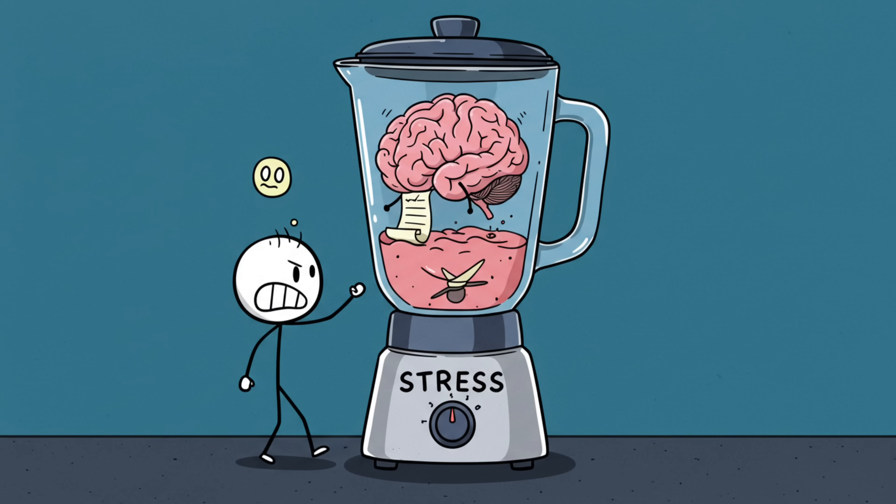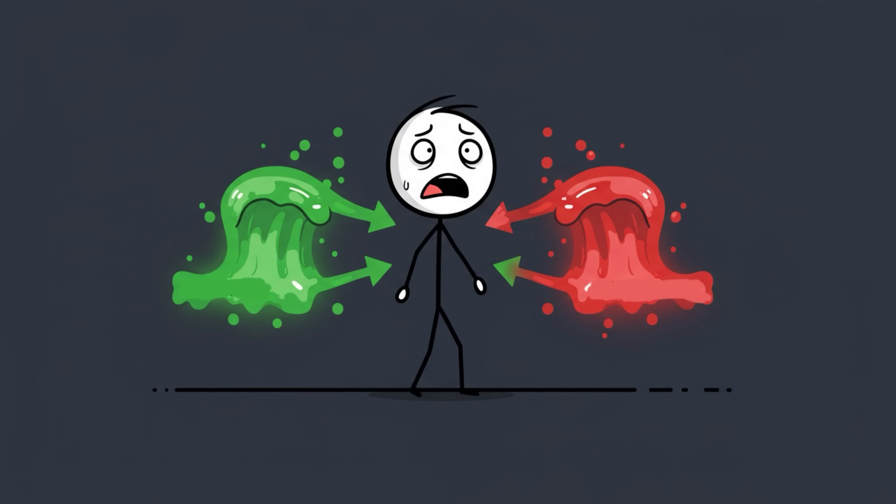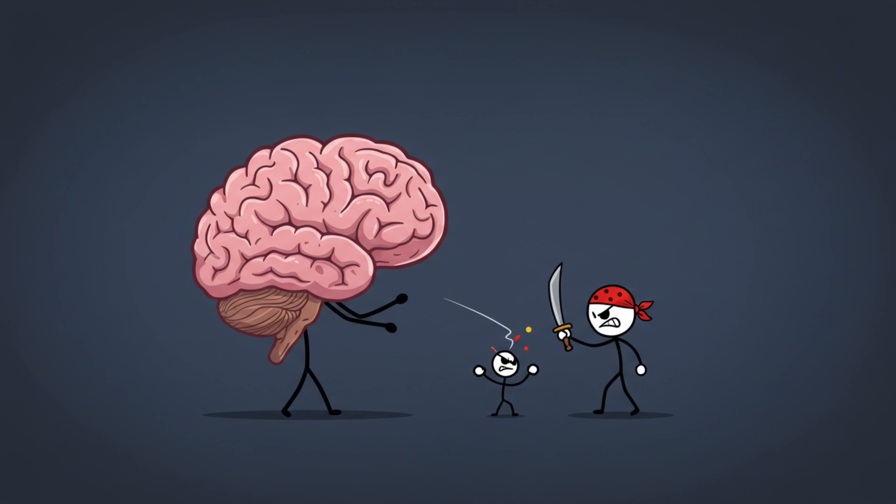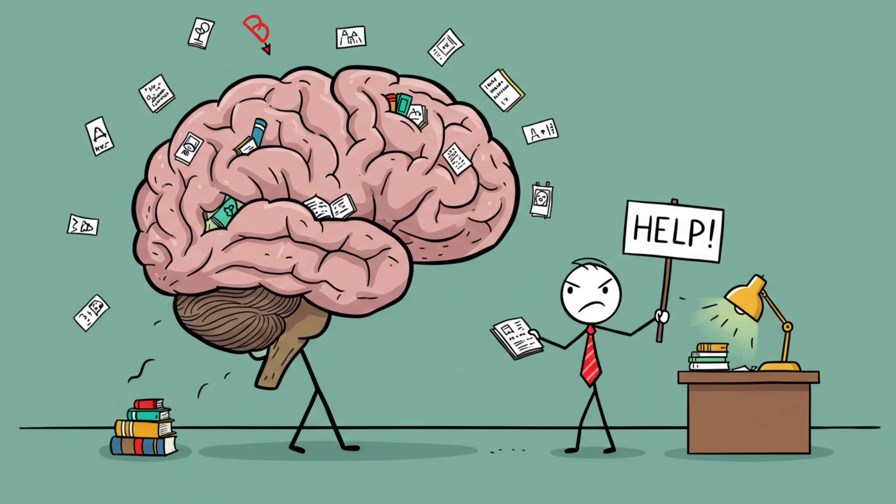stress basically throws your brain's timeline into a blender. When you're under stress, your body floods with cortisol and adrenaline, those delightful chemicals meant to help you outrun lions back when we lived in caves. The problem is, these chemicals don't just make you sweaty and twitchy, they also hijack your hippocampus, the part of your brain responsible for organizing memories.